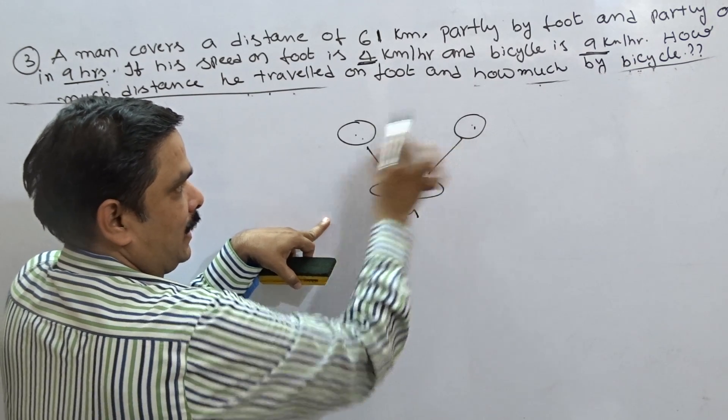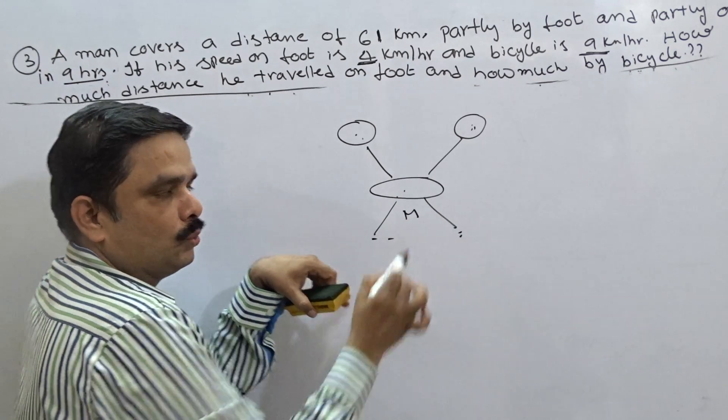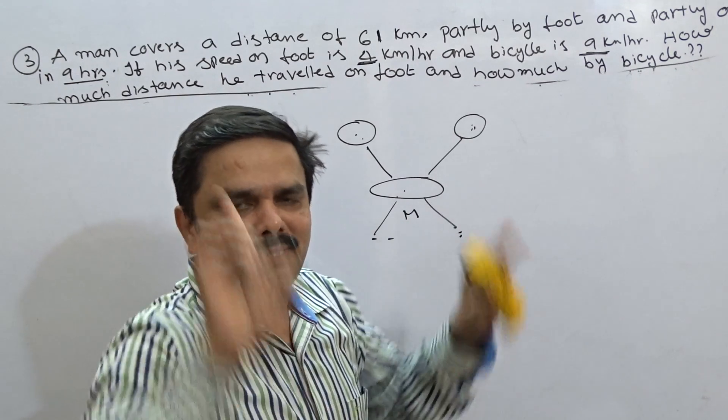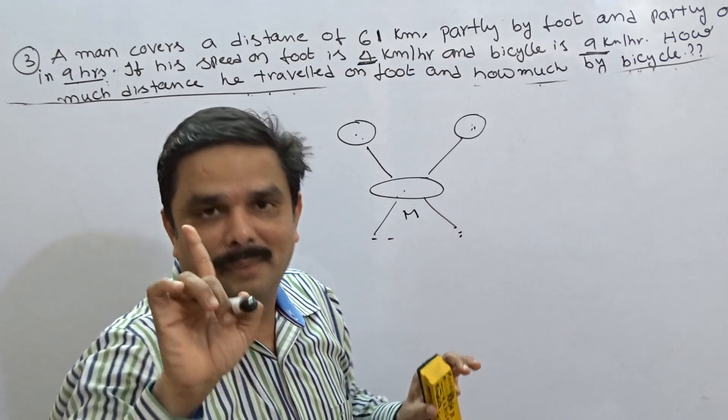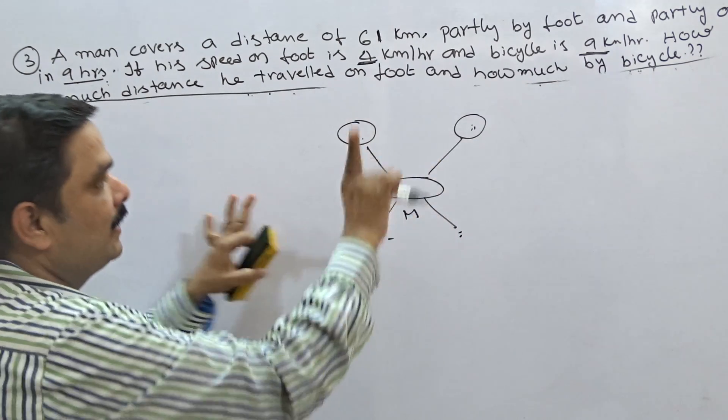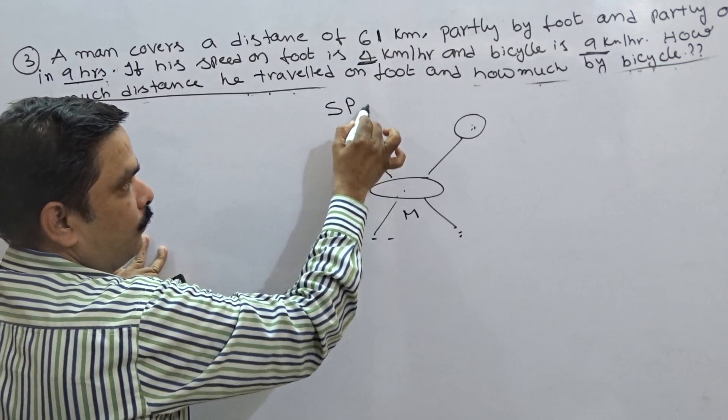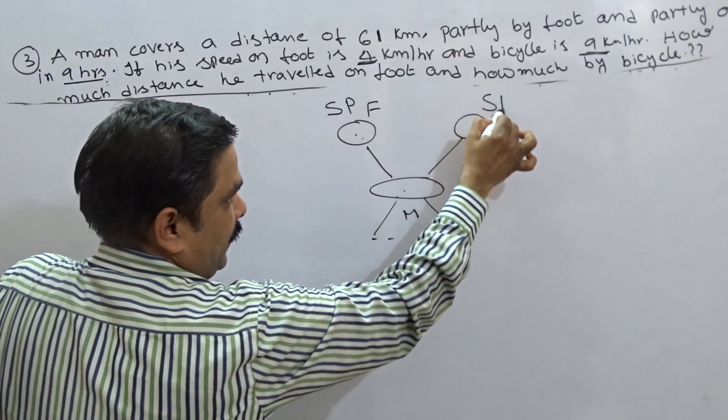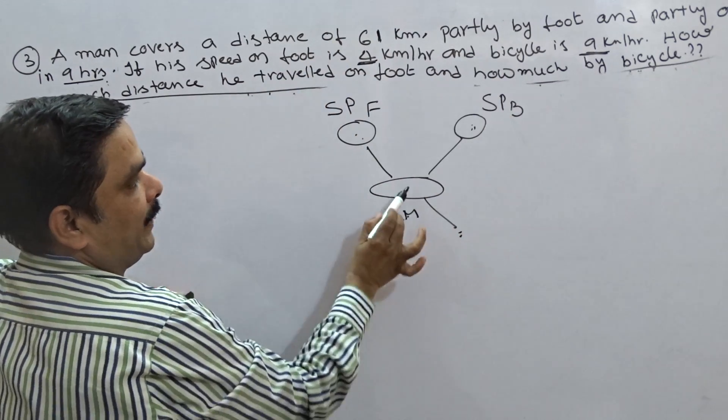With price, I start. This is price. This is price. This is price. I can get the ratio in which these two to be mixed up. The same concept can be used for time and distance problem also. But here, instead of price, which one shall I take now? Now, I am taking speed here. Speed on foot, then speed on bicycle, then the mean value means overall speed I take.